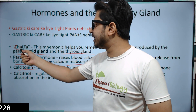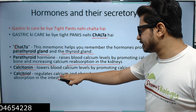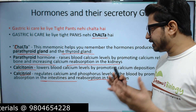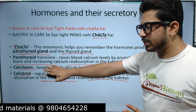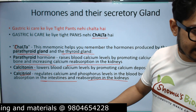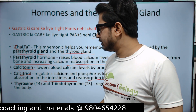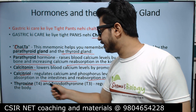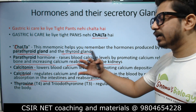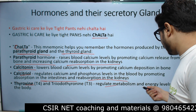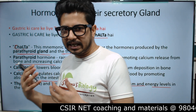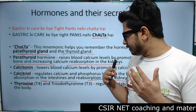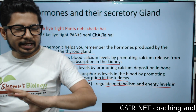There are two C's: one for calcitonin and another for calcitriol. Calcitriol regulates calcium and phosphorus levels in the blood by promoting absorption in the intestines and kidneys. Calcitonin and calcitriol both work together. Then T for thyroxine, also known as T4, and triiodothyronine, known as T3 — both secreted by the thyroid gland. They regulate metabolism and energy levels in the body. That covers all the hormones from the chalta section.